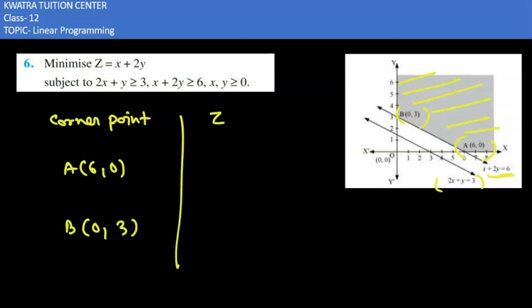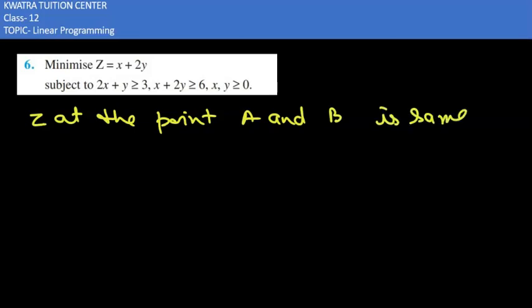So when we put this value in our equation which is z is equal to x plus 2y what we will get? In the place of x when we put 6 y is equal to 0, so here the value will be 6 and similarly when we put the second value which is for B we will obtain here again 6. So now both the values are same. So now as we can see z at the point A and B is same, we have both the values are equal.